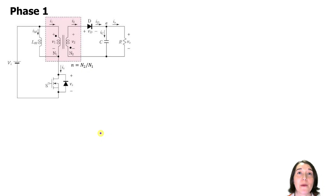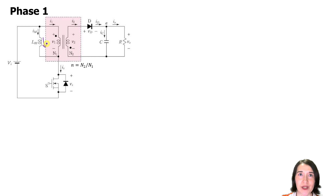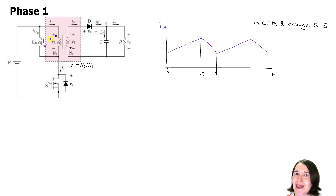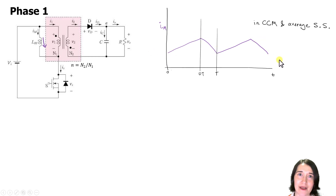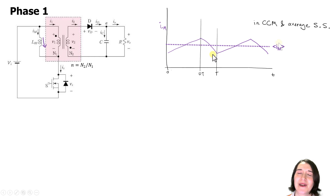We want to find the average value of the magnetizing inductance current in the flyback converter. The current looks like this: during the on time the current is increasing, and during the off time it is decreasing. So it's in CCM average steady state. The average value of this triangle wave is right at the midpoint of each incline and decline.